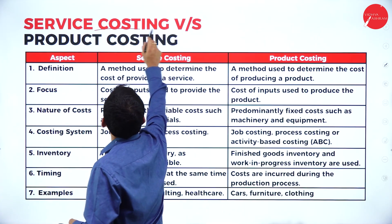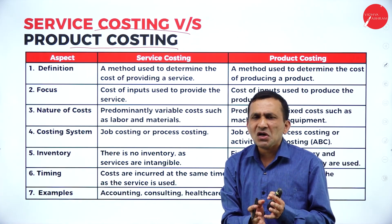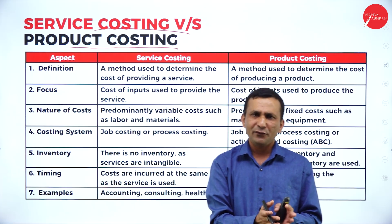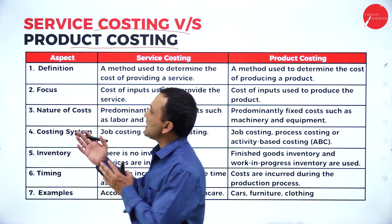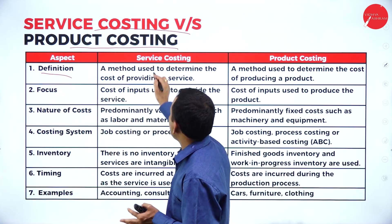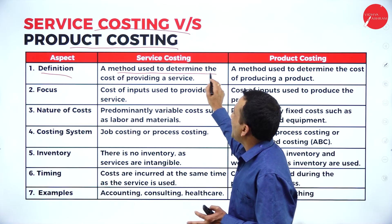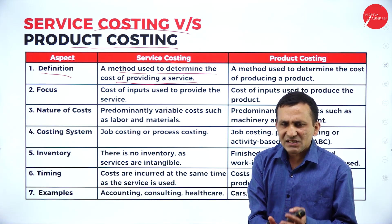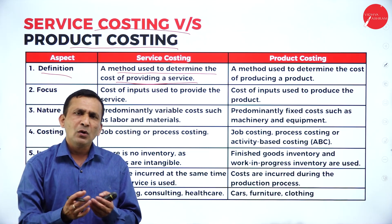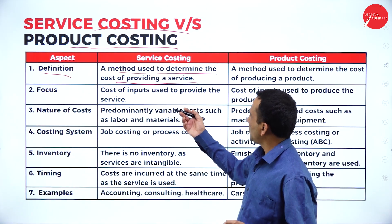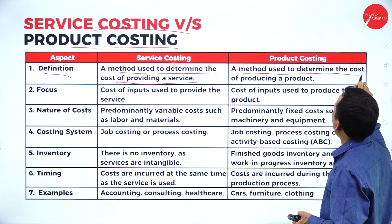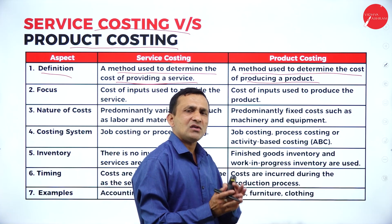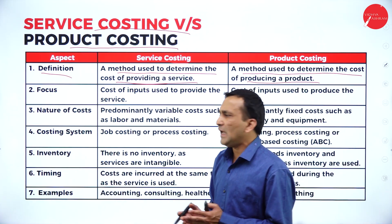Moving on to service costing versus product costing. Service costing is a method used to determine the cost of providing a service — before offering a service, the service provider wants clarity on how much expenditure will be incurred. Product costing is the method used to determine the cost of producing a product, equally involving direct costing, indirect costing, and other overheads.